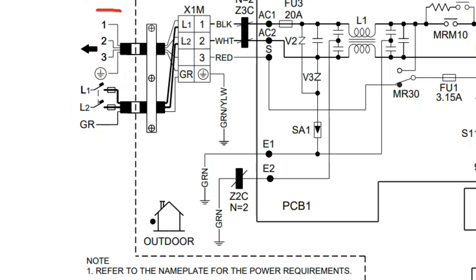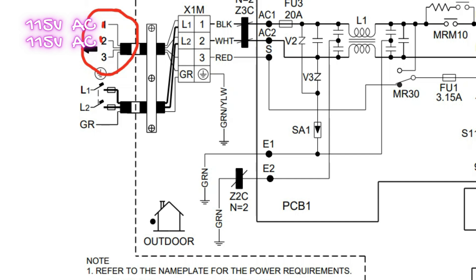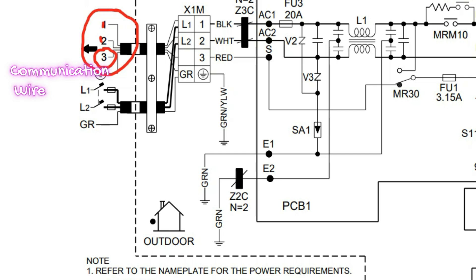Over here we have our power going to our indoor unit on terminals 1 and 2. That is 115 volts AC on each one of those to deliver 230 to the indoor header. Terminal number 3 is our communication wire.